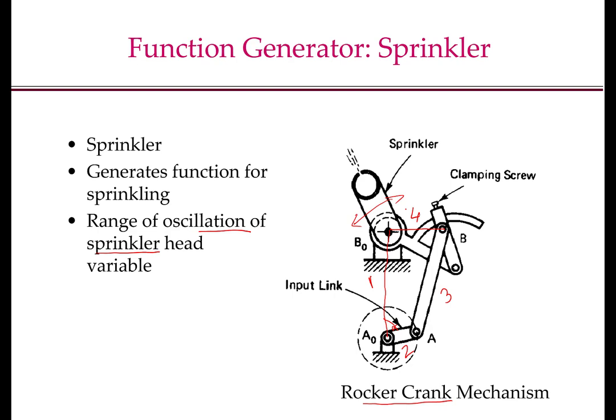From the figure, there is no physical line present between B0 and B. Let's think of this bar here as U and this bar here as V. The bars U and V are connected by a revolute joint, and bar V is also clamped to an extension of bar U with a clamping screw. In essence, there is no relative motion between U and V. U, V, and this extension form a rigid body. This rigid body is connected to AB at one node and to the ground at B0. Therefore, B0B is the output link. By changing the point at which the screw is clamped, you can change the length of B0B, thereby changing the rocker angle.